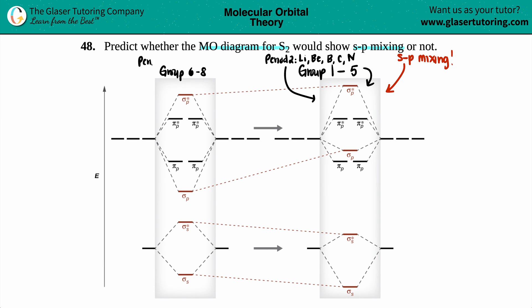For example, if we were talking about period 2, this would be your oxygen, your fluorine, and your neon. Now the question is: sulfur, when it becomes a molecular diagram, would that show sp mixing or not? Well, sulfur, we have to just identify what group sulfur is in.